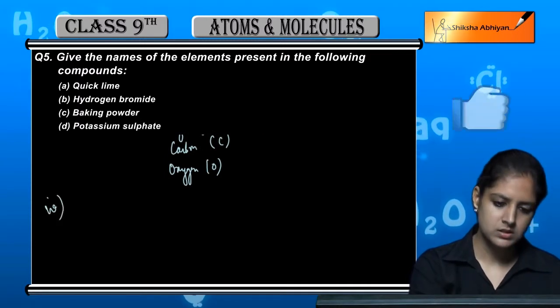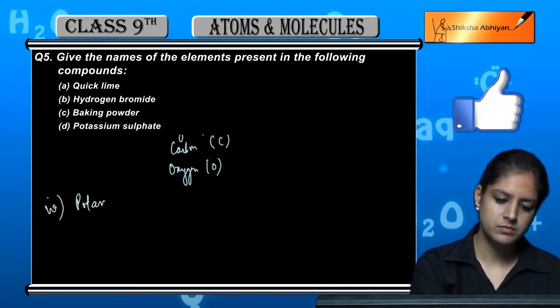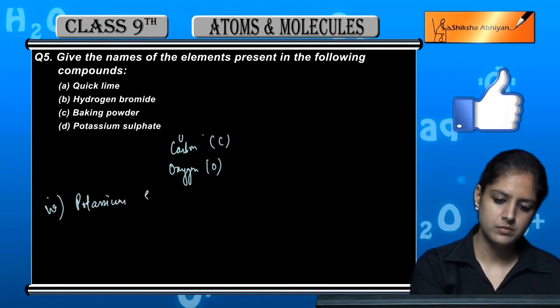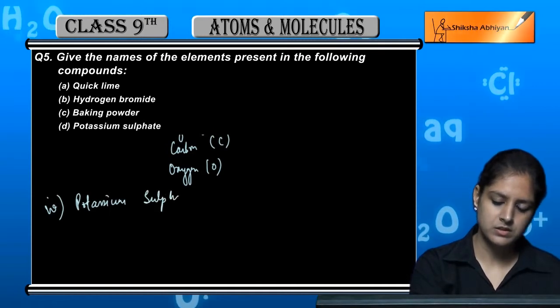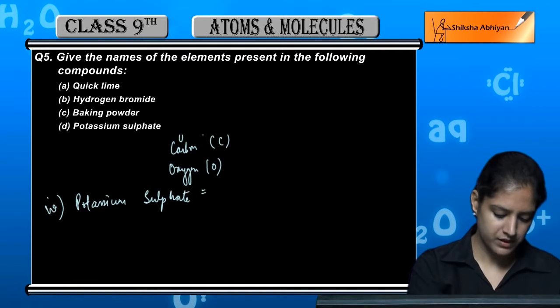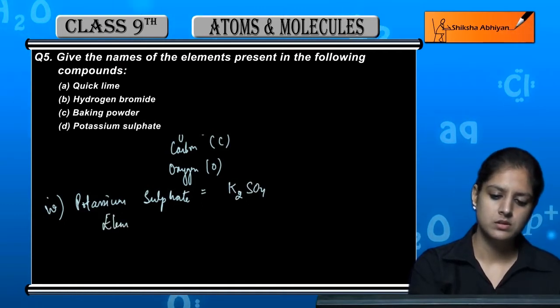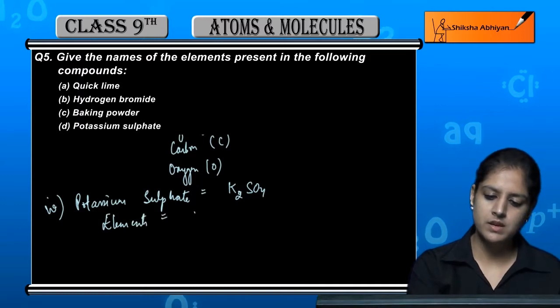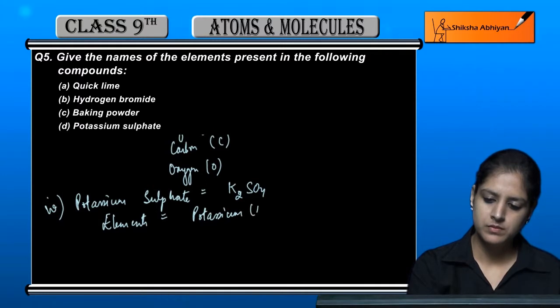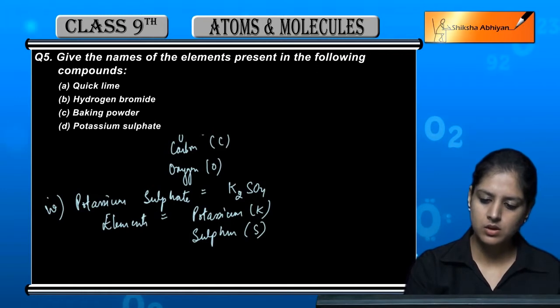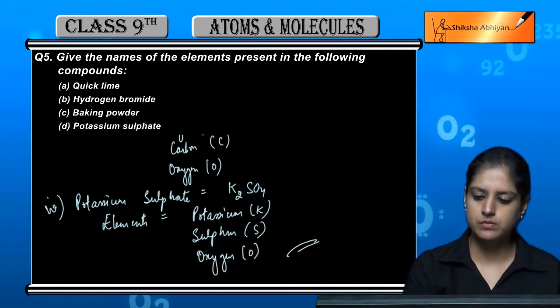Next is potassium sulphate. Potassium sulphate's formula is K2SO4. The elements are potassium (K), sulphur (S), and oxygen (O).